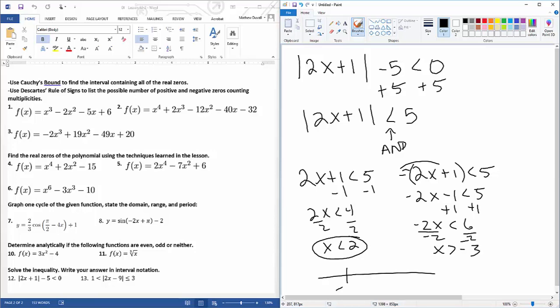So now putting out a number line, we have negative 3, we have 2, they're open circles. x is less than 2, x is greater than negative 3. This is where they overlap, so your answer is going to be from negative 3 to positive 2.